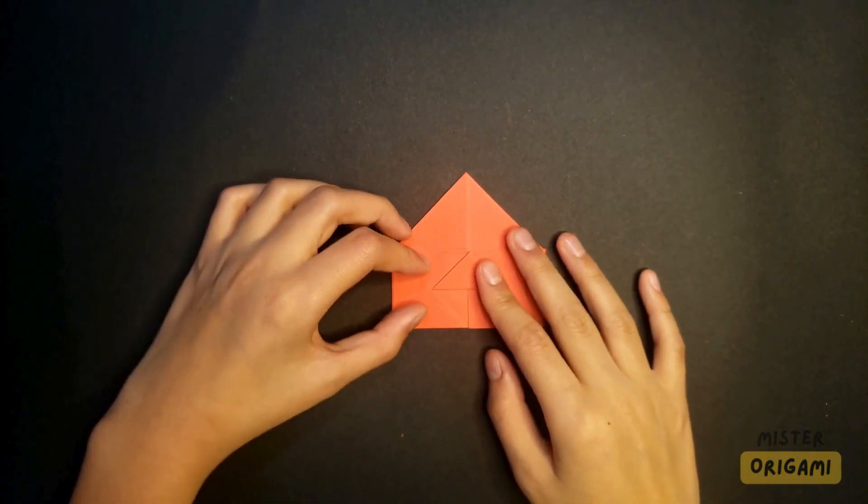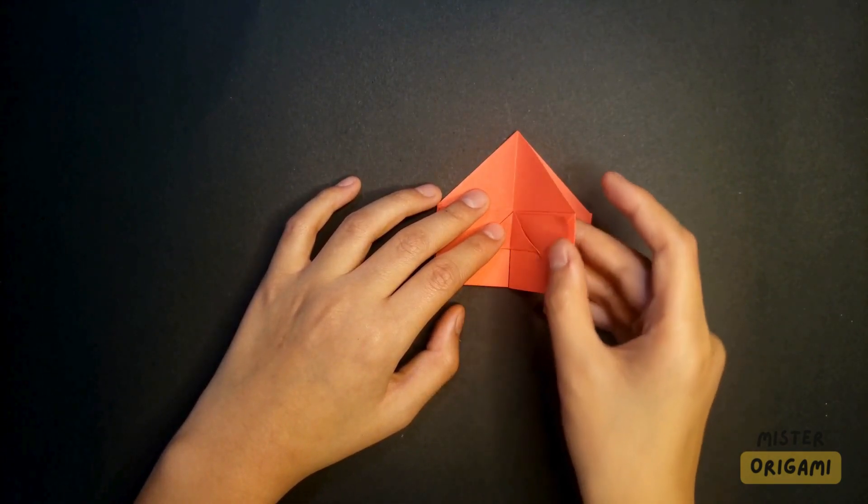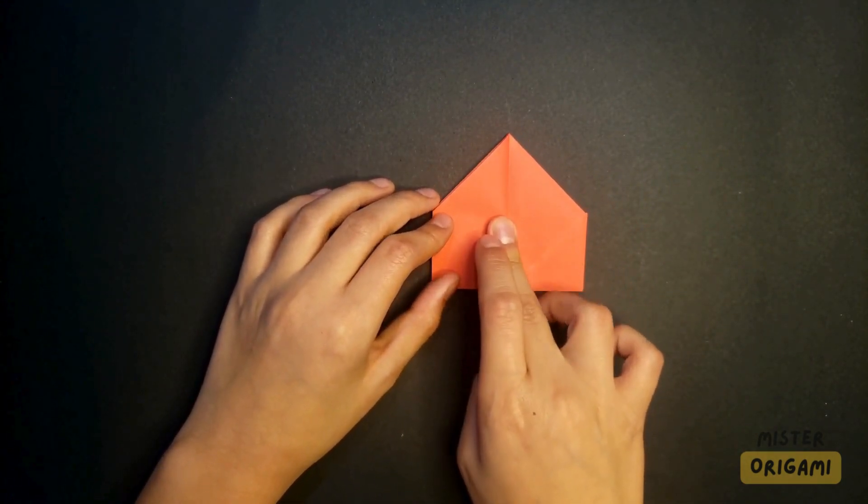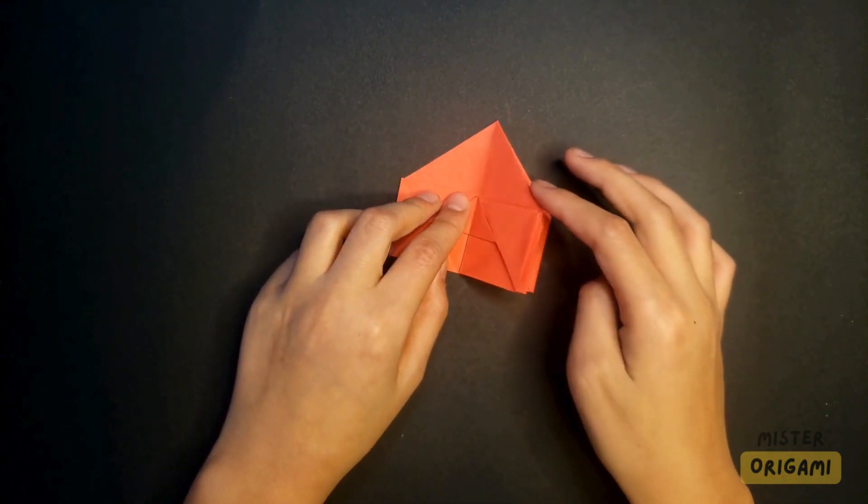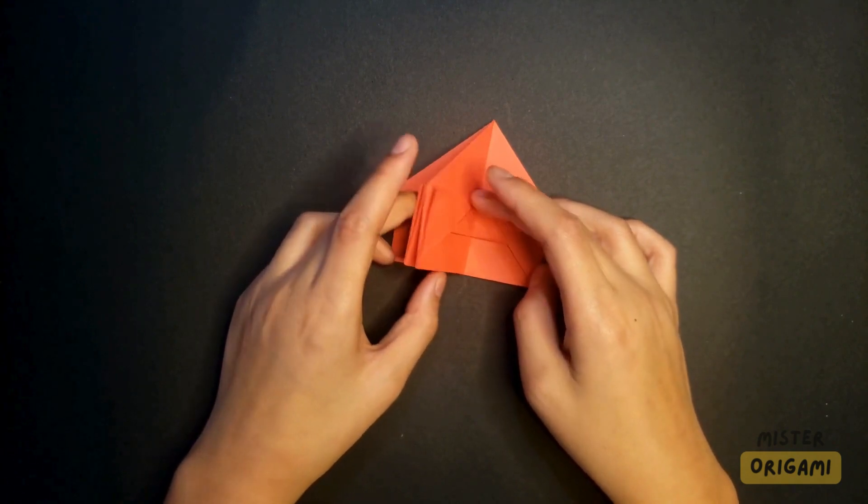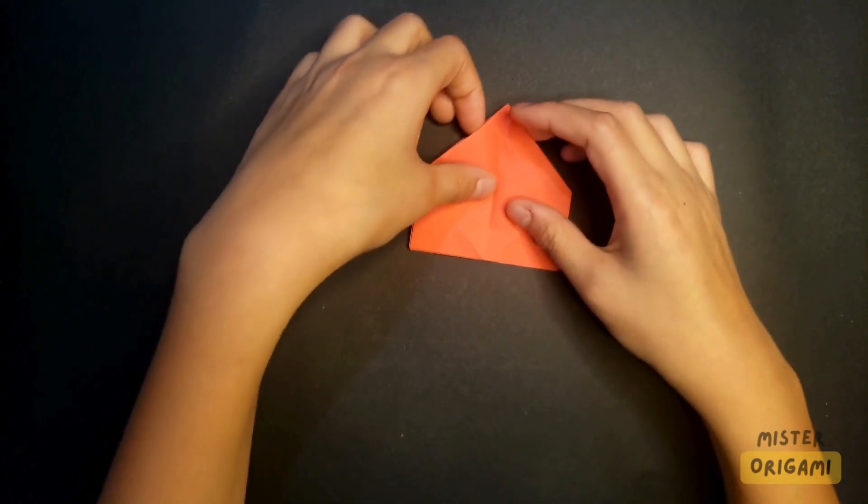After you've done that, you're gonna fold this flap like you're folding a book to the other page. Flip that over, and fold this the other way too. Wait, no, not like this. Like this, so it's shown like a little house.